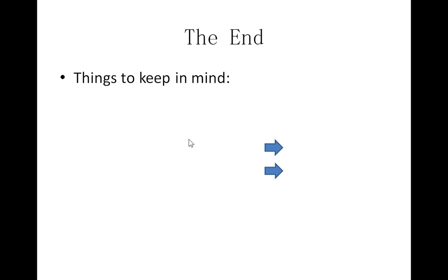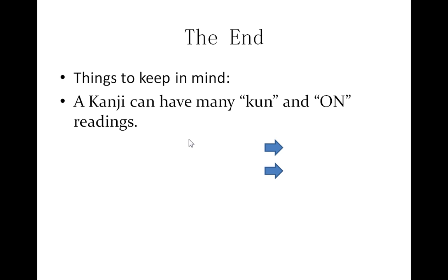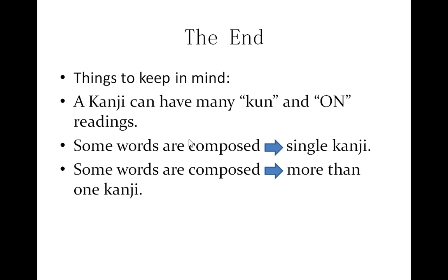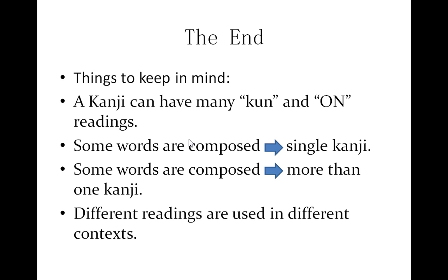That's all for today. Today's lesson might seem a bit complex, but please keep the following things in mind: a kanji can have many kun and on readings, so it's not as simple as one kanji having one reading and one meaning — it's much more complex. Some words are composed with a single kanji like sora for the sky, whereas others use more than one kanji like kuki for the air. And different readings are used in different contexts.